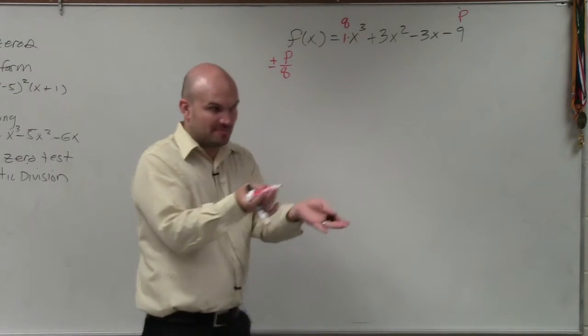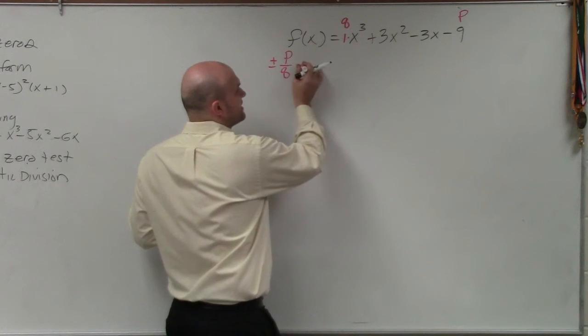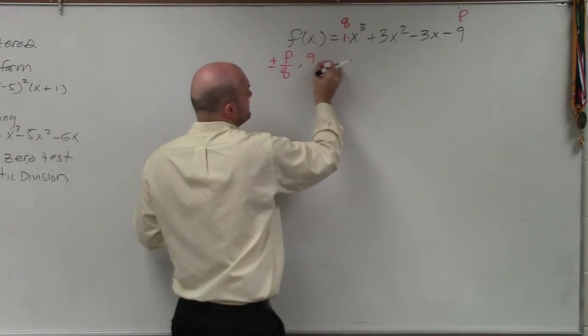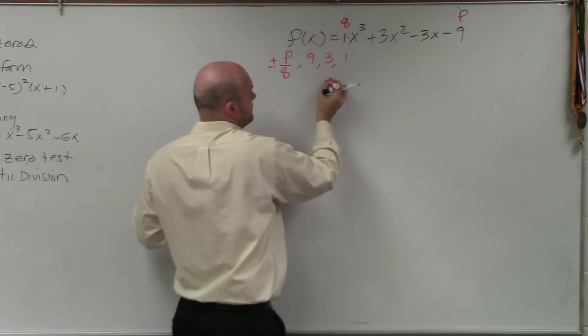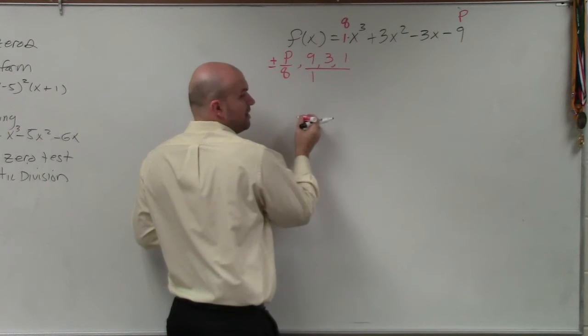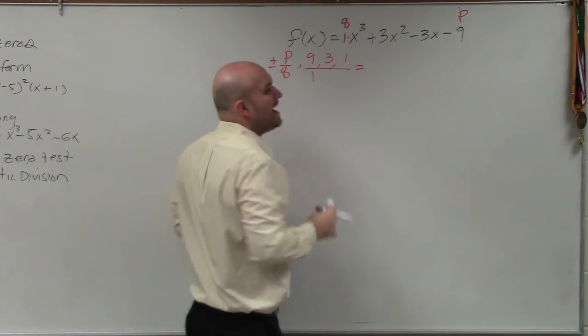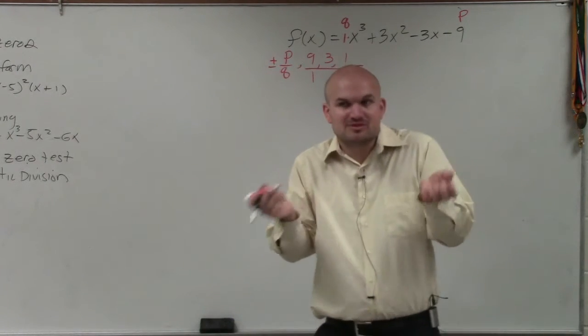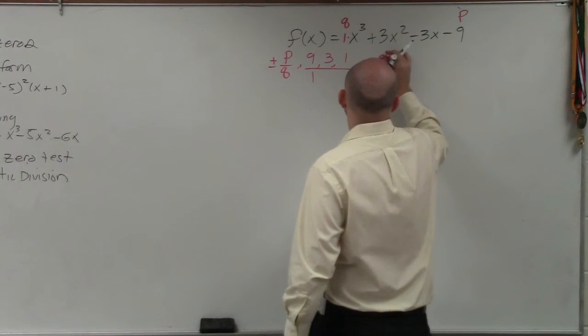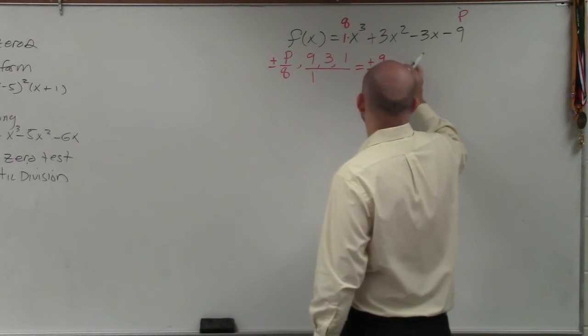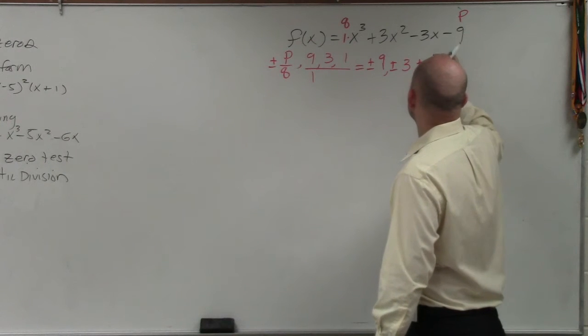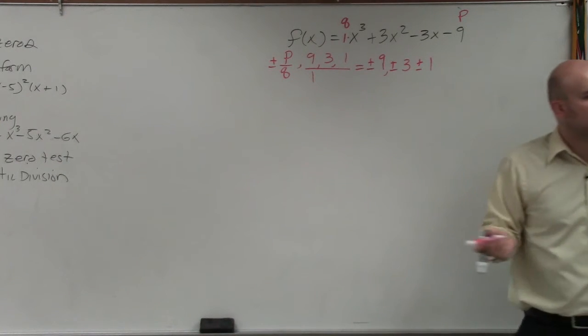Rational zeros are numbers you can write as fractions. So what are the factors of nine? Forget about the negative. It's nine, three, and one. What are the factors of q, which is my coefficient of one? Just one. So therefore, the possible rational zeros are plus or minus nine over one which is just nine, plus or minus three over one which is just three, and plus or minus one over one which is just one.